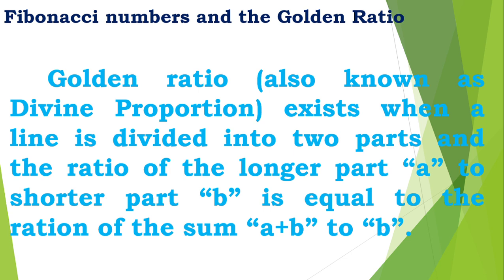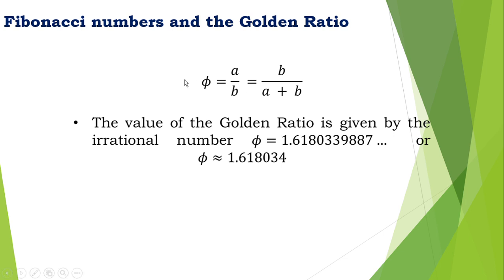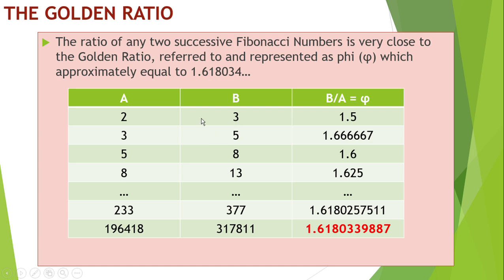How about the golden ratio? The golden ratio exists when a line is divided into two parts and the ratio of the longer part a to the shorter part b is equal to the ratio of the sum a plus b to a. So we have φ = a/b = (a+b)/a. The value of the golden ratio is approximately 1.618034, like three divided by two, five divided by three, eight divided by five.